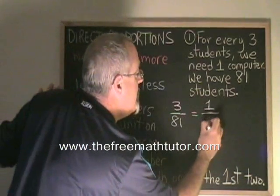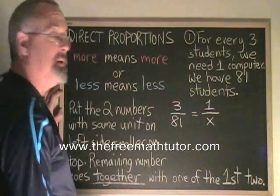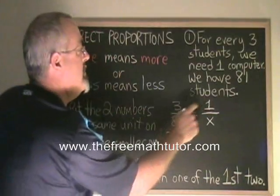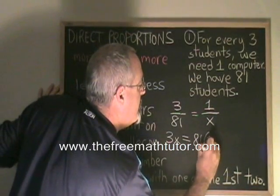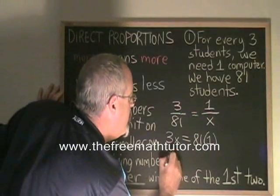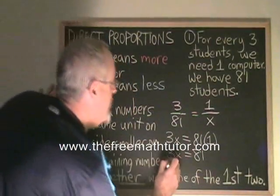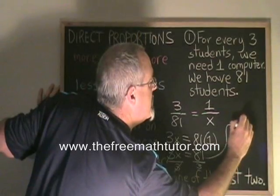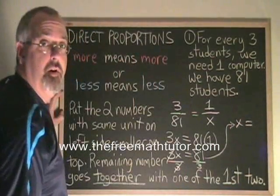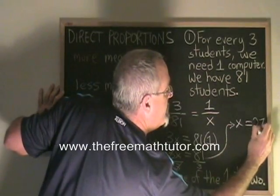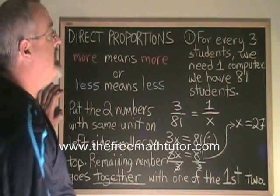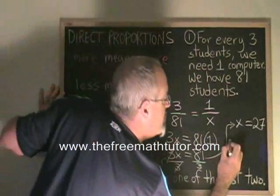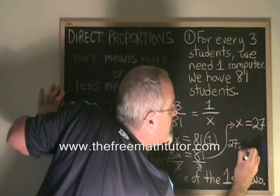I put the x in the last remaining place and then I use the fundamental rule — I cross multiply and I solve. 3 times x equals 81 times 1. This simplifies to 3x equals 81. Then if I divide both sides by 3, these cancel, my x is isolated and it is equal to 81 divided by 3, which is 27. The final answer is we will need 27 computers if we have 81 students. Make sure to give your answer, 27, with the unit of measure, which in this case is computers.